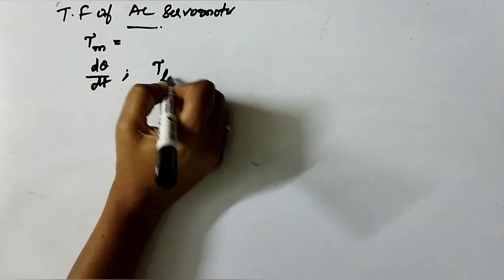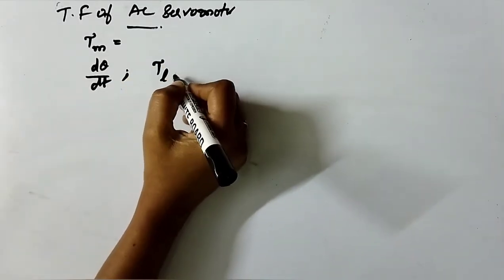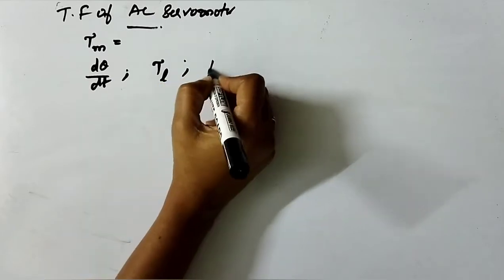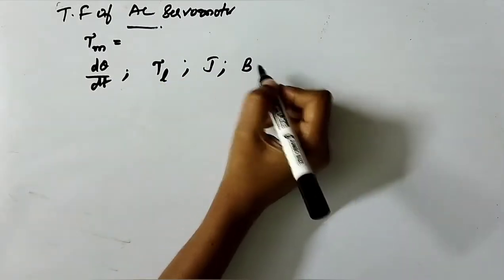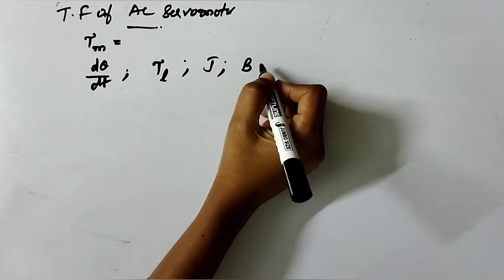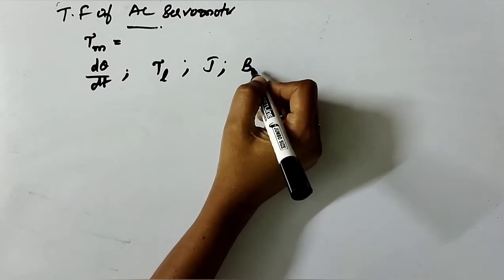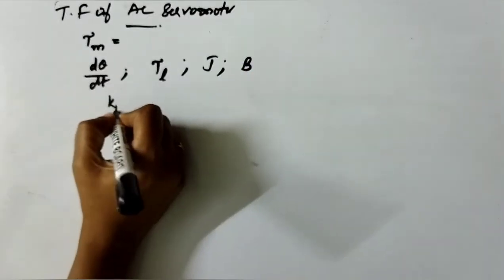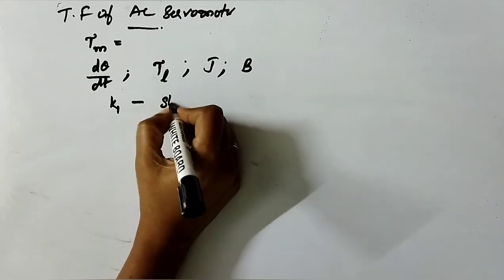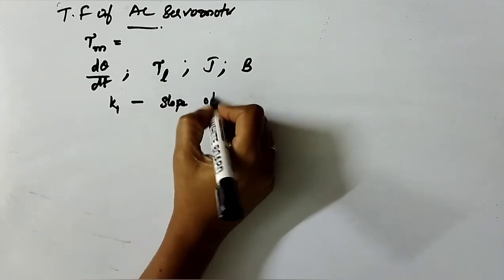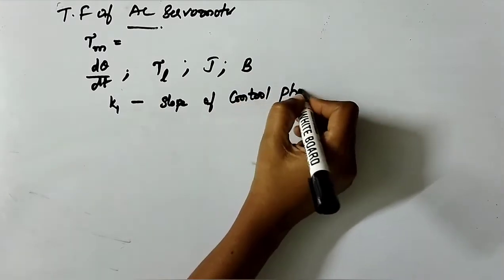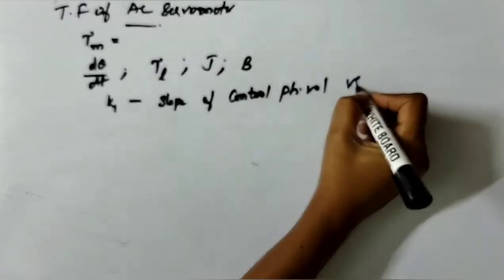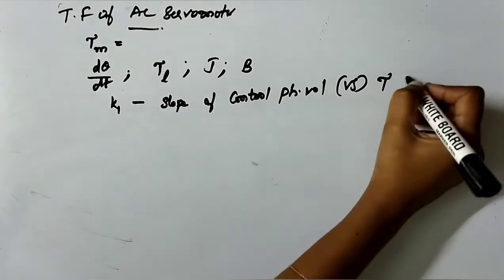J is moment of inertia as you already know. B is viscous frictional coefficient of load and the rotor. K1 is slope of control phase voltage versus torque characteristics.